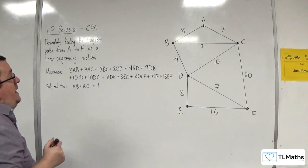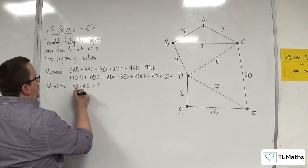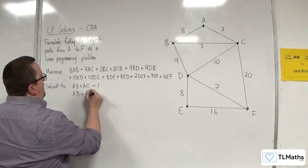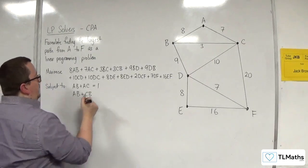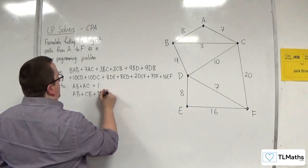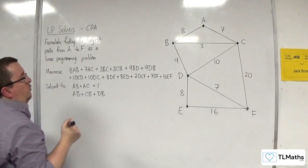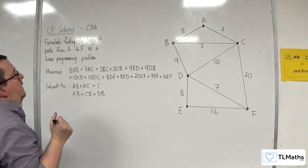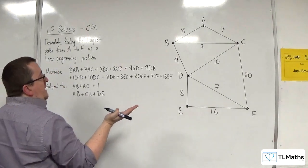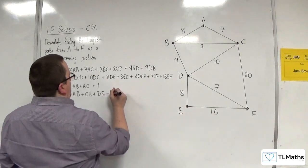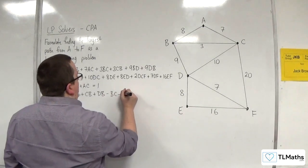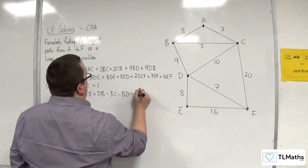Then for B, I've got all the routes coming in, which are AB or CB or DB, take away all the routes going out. We're not going to have BA because that would be going back to the start vertex. Take away BC and BD, and that's got to be equal to 0.